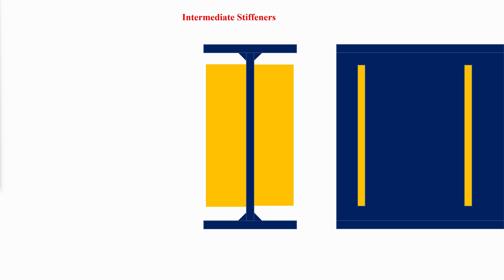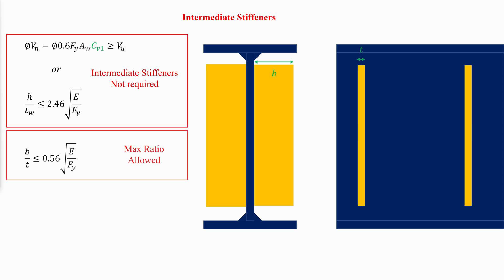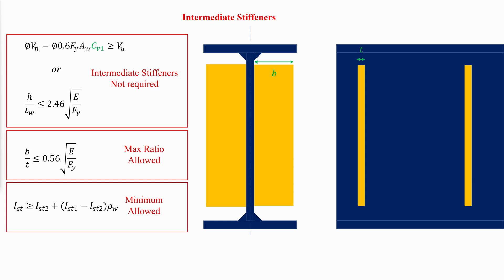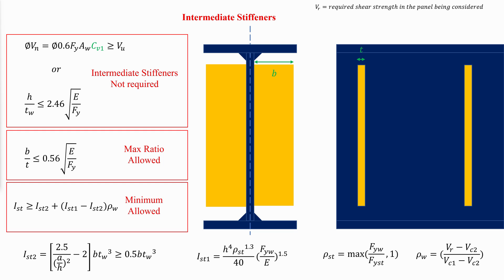Intermediate stiffeners are not required when either the no-tension-field shear strength is adequate or the depth-to-thickness ratio of the web is less than the specified limit, each of which can be satisfied by making the web thickness large enough. If stiffeners are used, there is a maximum width-to-thickness ratio and a minimum moment of inertia, where IST is the moment of inertia about the vertical axis of symmetry through the web for a pair of stiffeners, and IST2 is the required moment of inertia for the no-tension-field case. ρST is the maximum of the ratio between the yield strength of the web to that of the stiffener and 1.